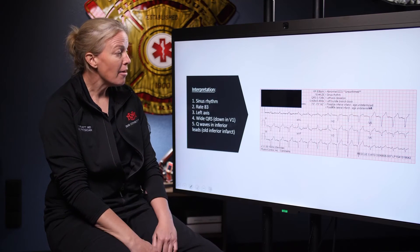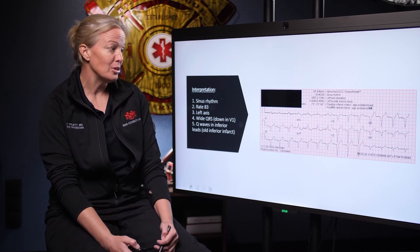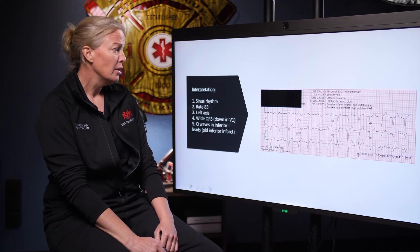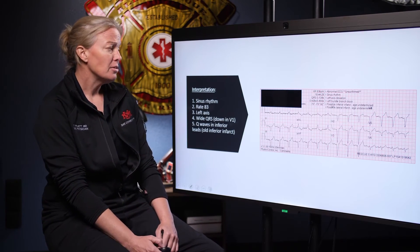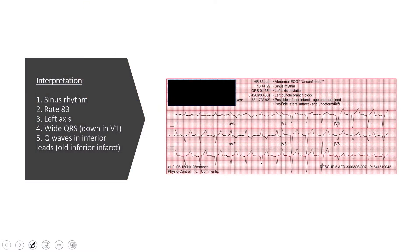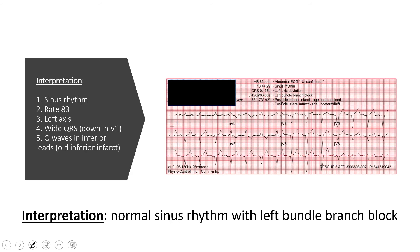So what we have at the end of the day: a sinus rhythm with a rate of 83, a leftward axis in the setting of a left bundle branch block with also a first degree AV block, and then some old Q waves in the inferior leads.